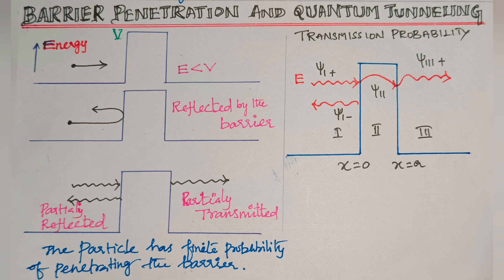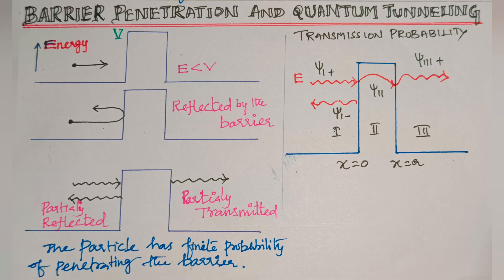We already know that an electromagnetic wave striking a barrier or thick wall is partially reflected and partially transmitted through the interface. Based on this electromagnetic wave principle, a quantum particle can similarly penetrate through the potential barrier.